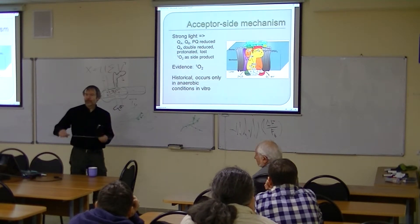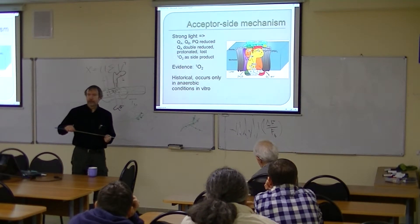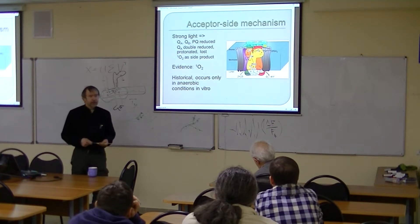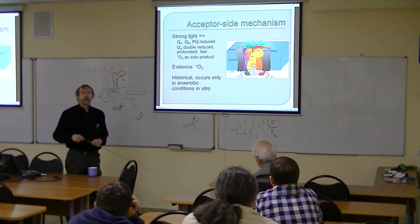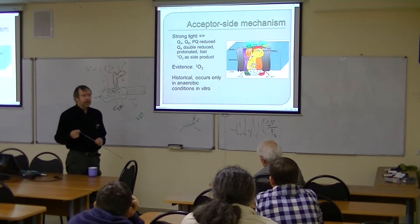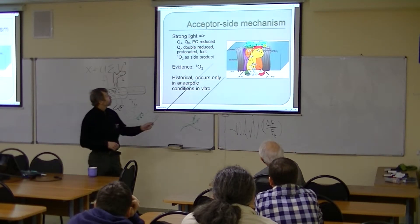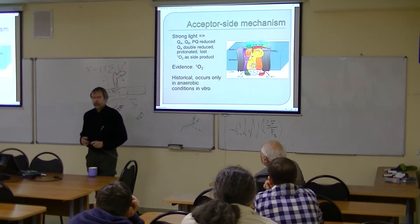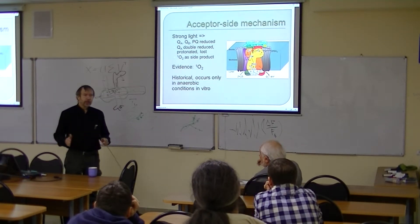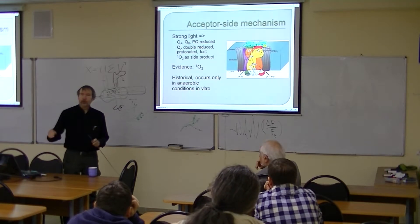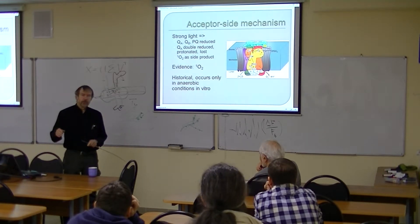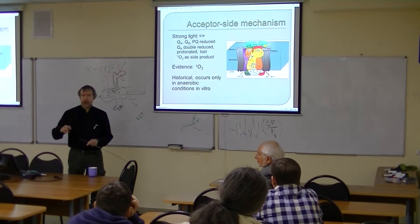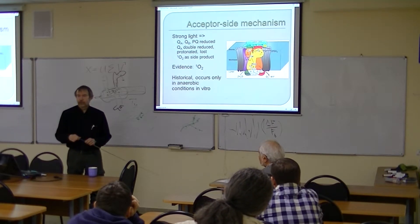How did they show that QA is double reduced? They used EPR and also biochemical techniques to show that QA was going away. So it is not only double reduced — with very long and harsh treatment, you will see that it slowly disappears. The explanation for this is that QA becomes protonated after double reduction, and then there is no more binding of this species.